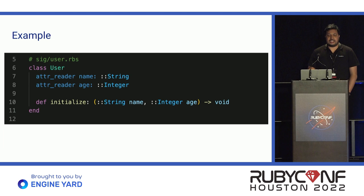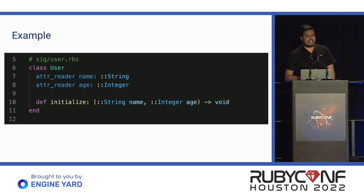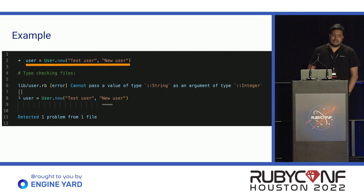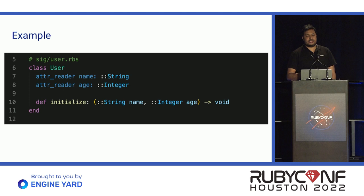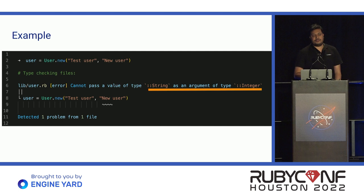Let's change it to the kind of values we want for our attributes. For name we want a string, and for age we want an integer. We've declared name as string, age as integer, and initialize accepts two parameters — one string and one integer — and returns nothing. Now, if I try to instantiate the User class with two string arguments, and on the previous slide we defined one string and one integer, this is going to give me an error: string type is not accepted because the argument type is integer. These kinds of errors we can catch very early when annotating our code with RBS.